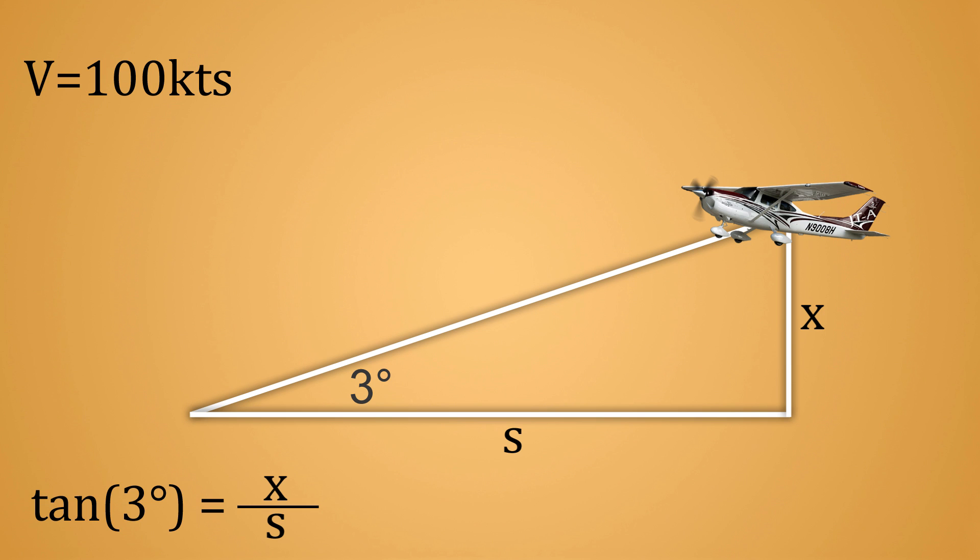Since we want the rate of descent in feet per minute, we need to convert our speed from knots, which is nautical miles per hour, to feet per minute as well. To do this, we can divide the speed by 60, which gives us the speed in nautical miles per minute, and then multiply it by 6080, since there is approximately 6080 feet in one nautical mile. We now have the speed in feet per minute.